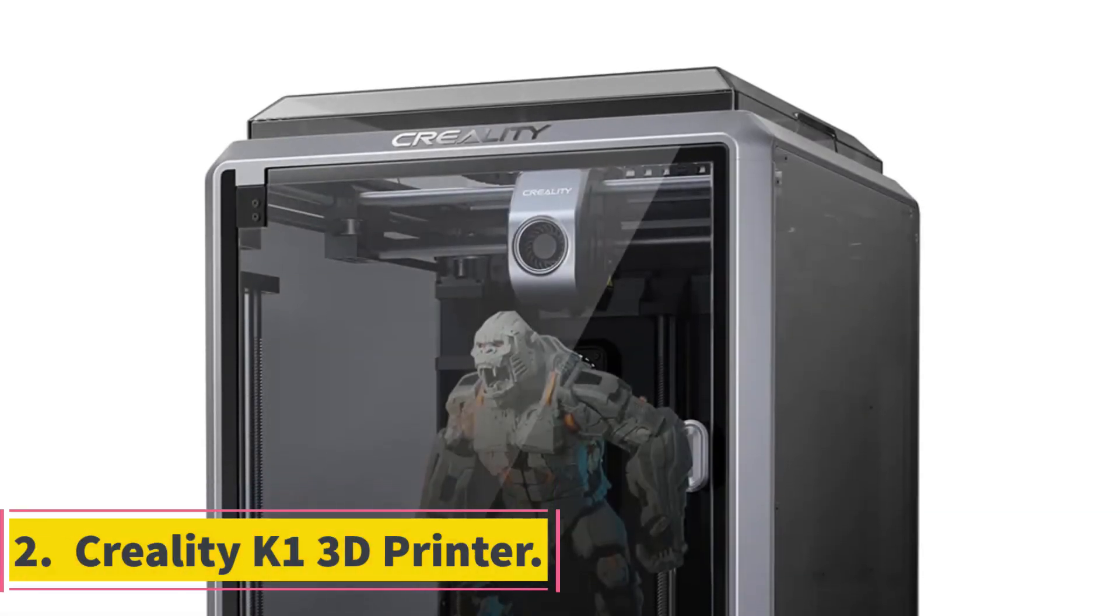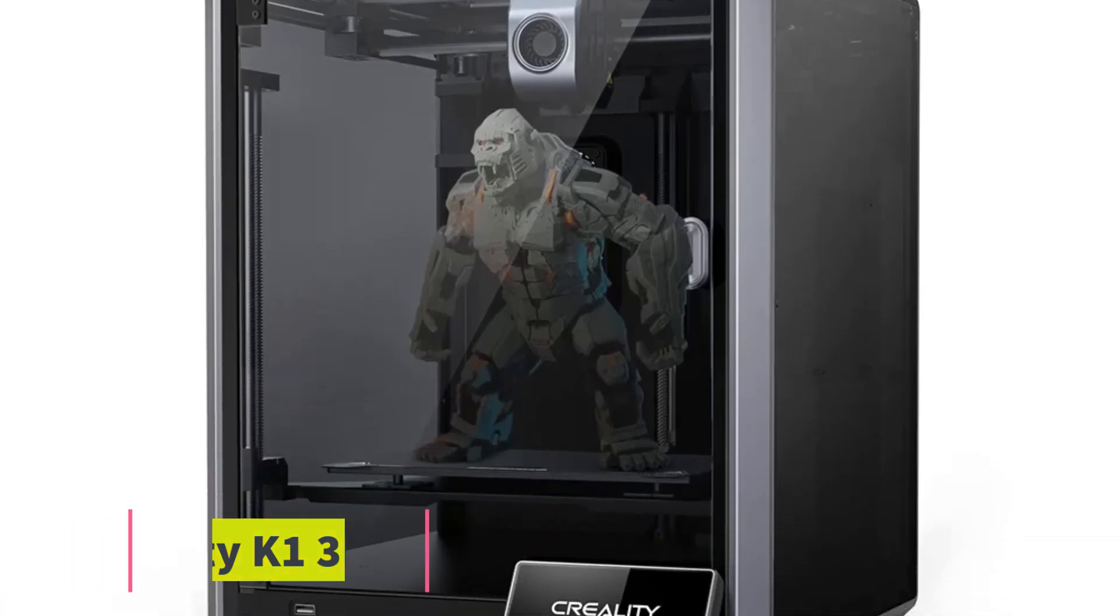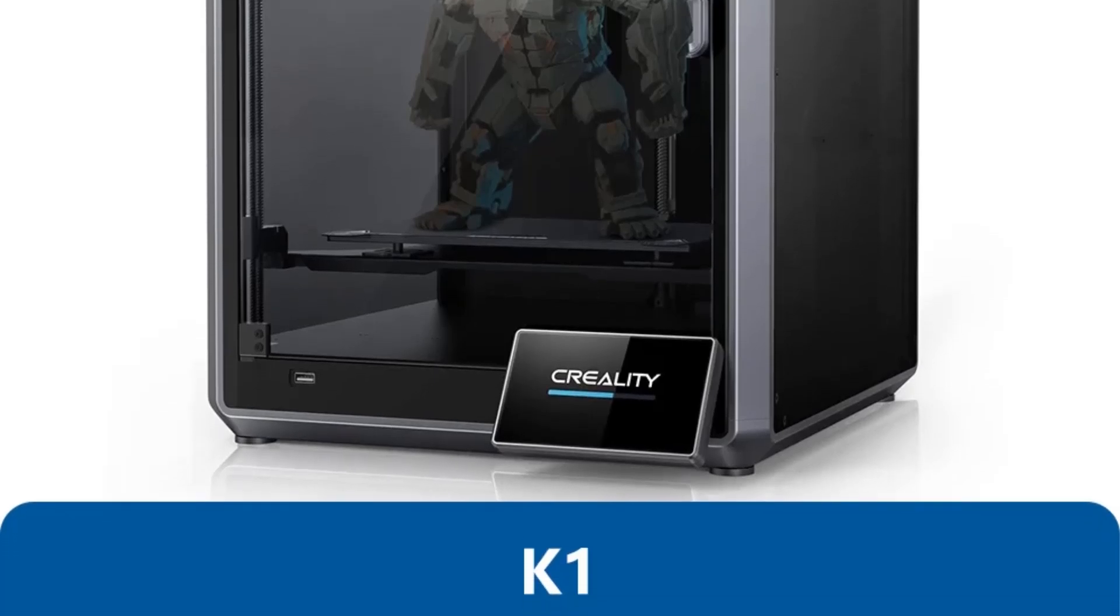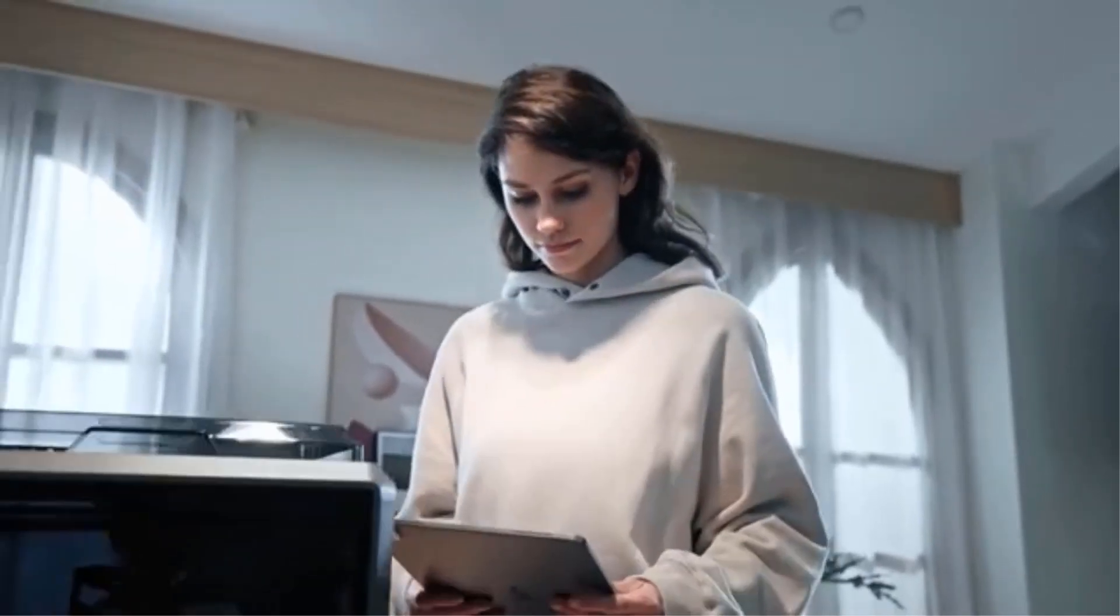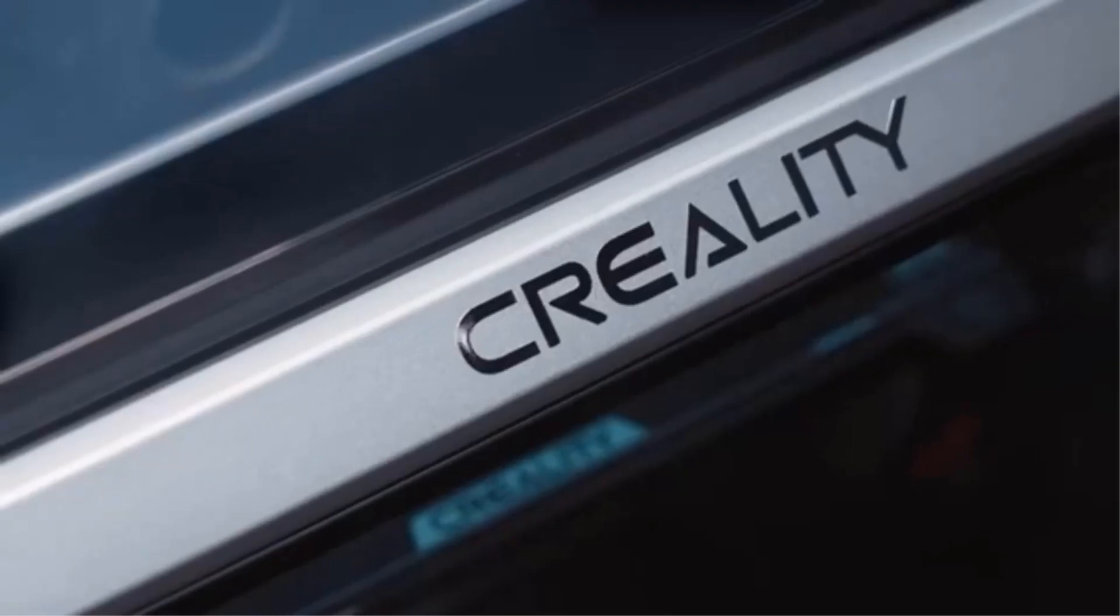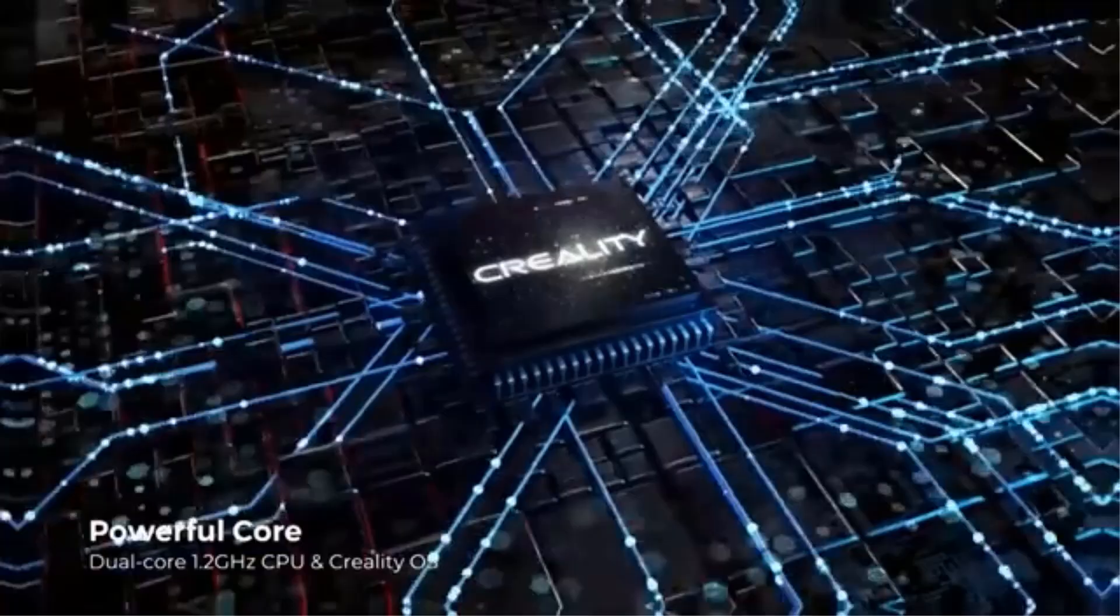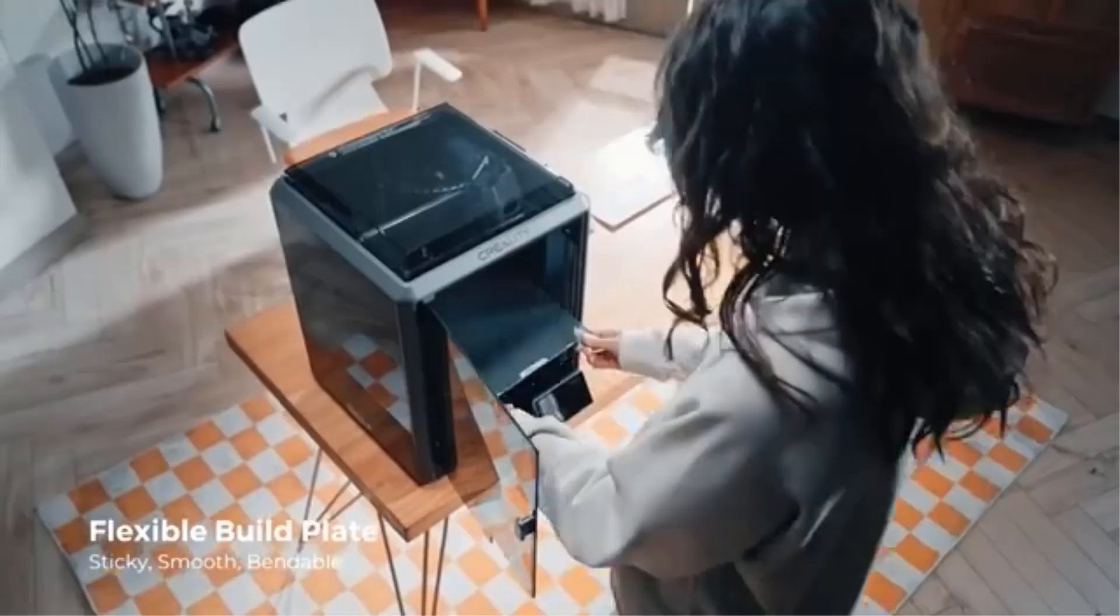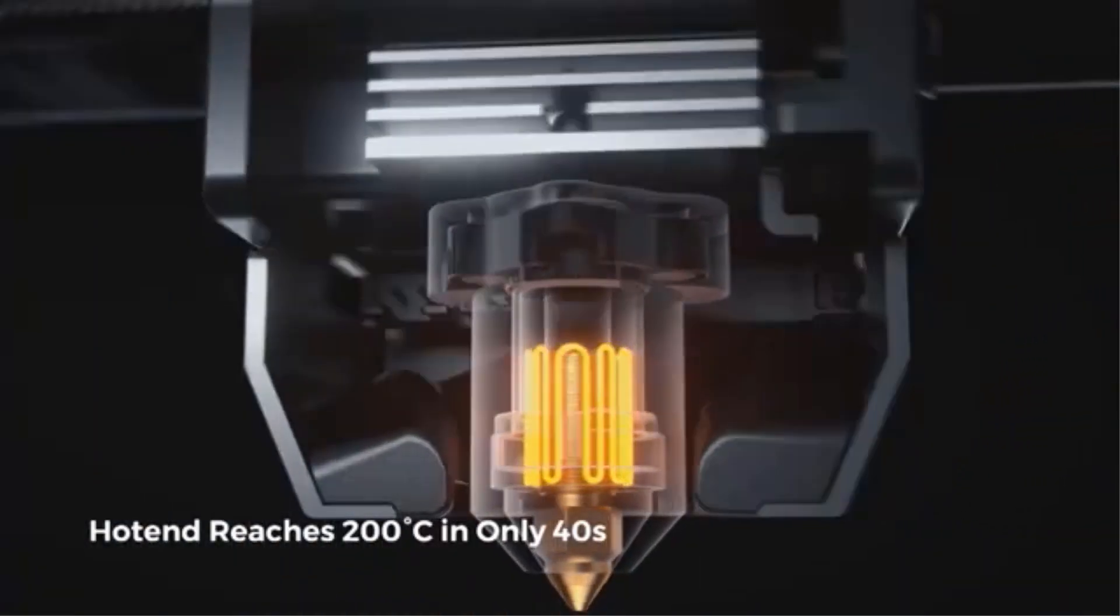Number 2: Creality K1 3D printer. The Creality 3D K1 printer is a high-speed FDM printer designed for efficiency and precision. With a build volume of 220 x 220 x 250 mm and a product dimension of 355 x 355 x 480 mm, the K1 offers a large printing area in a compact frame. It features a dual-gear direct-drive extruder, hands-free auto leveling, and a flexible build plate for easy printing.